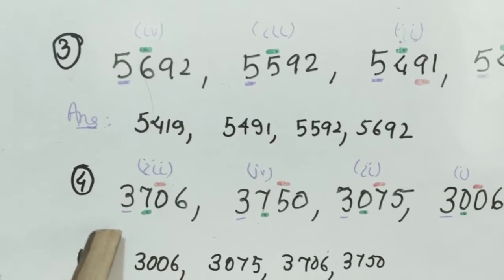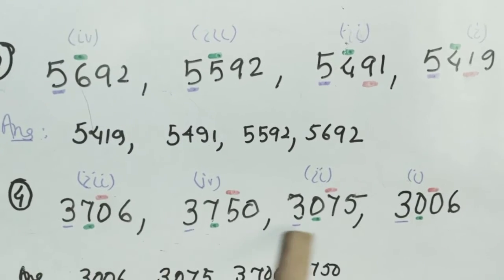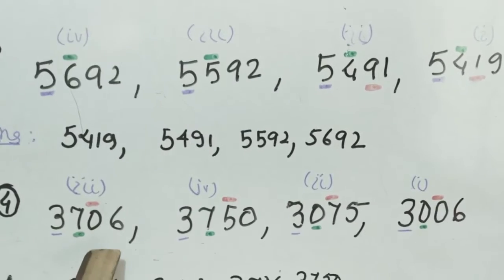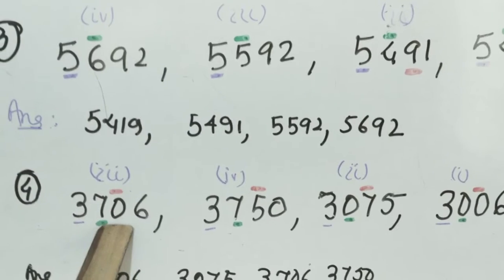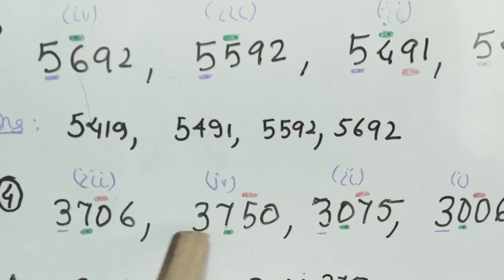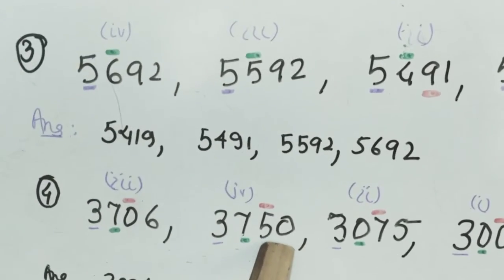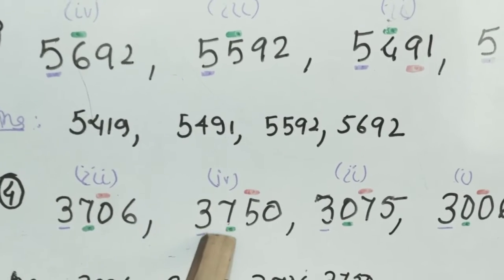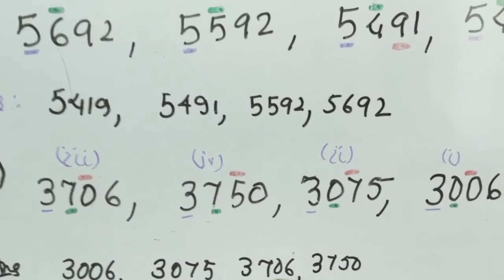This is again an interesting question, you can see. At the 1000 place, in each case, the number is the same. So what we are doing? We are comparing the numbers at the 100 place. At the 100 place, here it is 7 and here it is 7 — again there is confusion. So let us compare the numbers at the 10th place. Here it is 5, here it is 0. Since 5 is greater than 0, we are putting this number at the last place — this is the greatest one. This is the second largest one.